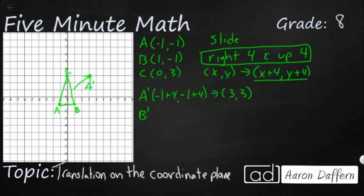So B prime is going to be that 1 plus 4, negative 1 plus 4. And so that is going to be 5, 3. So it's going to be 5, 3 right there. There's my B prime.